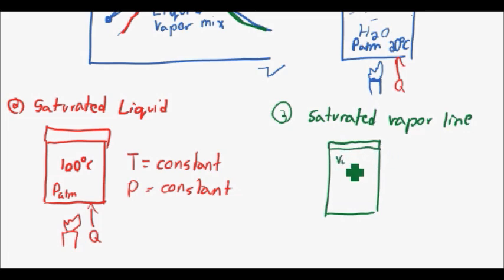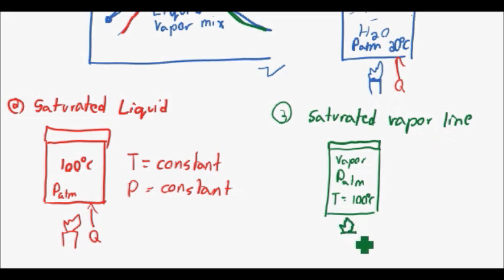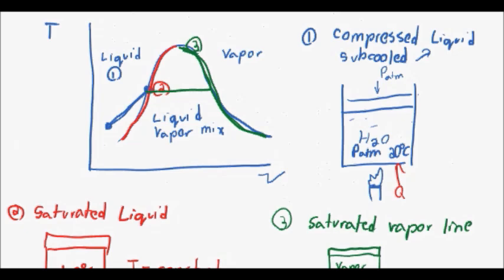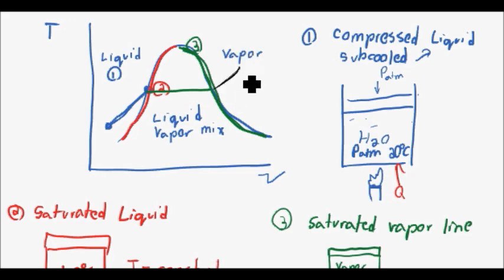At the saturated vapor line, your water has completely boiled off and you now have vapor inside your container. The specific volume has continued to expand as you created this gas, and you've maintained atmospheric pressure — your temperature is still at 100 degrees Celsius. Now you are on the saturated vapor line. If you continue to add heat beyond this point, maintaining constant pressure, your temperature suddenly begins to increase again.